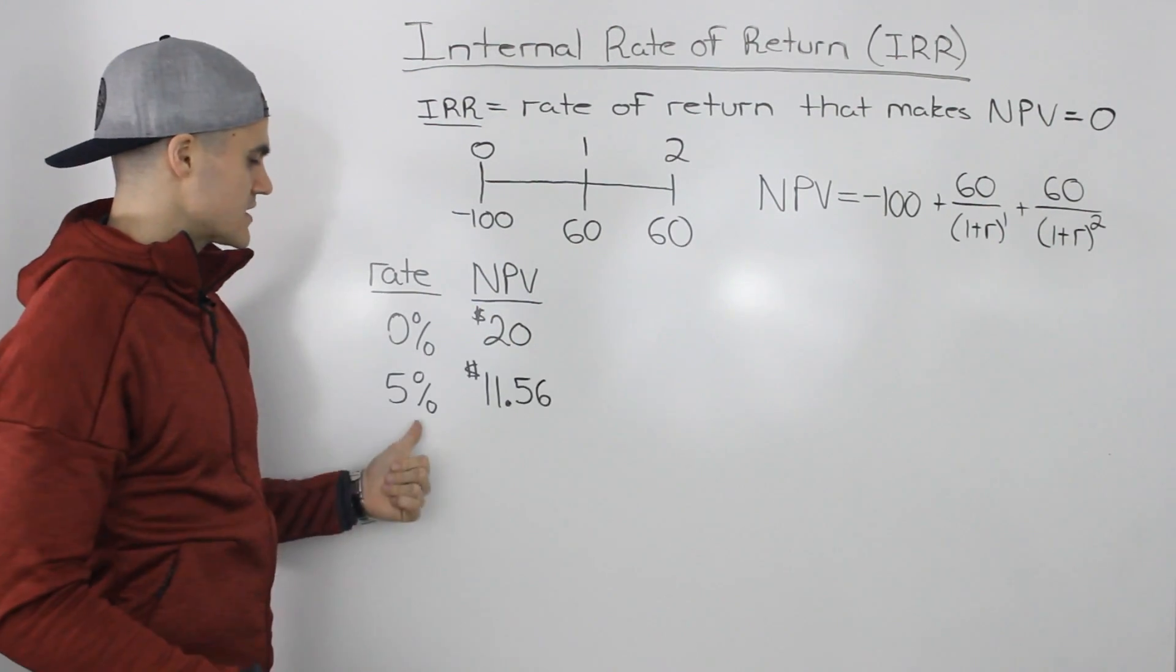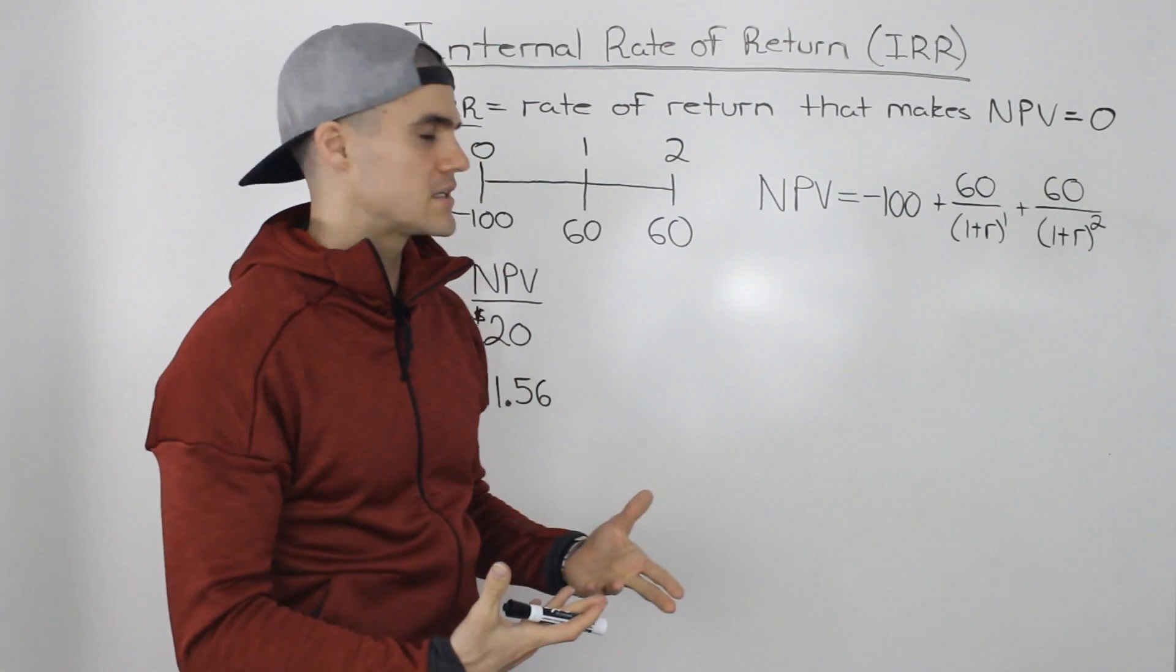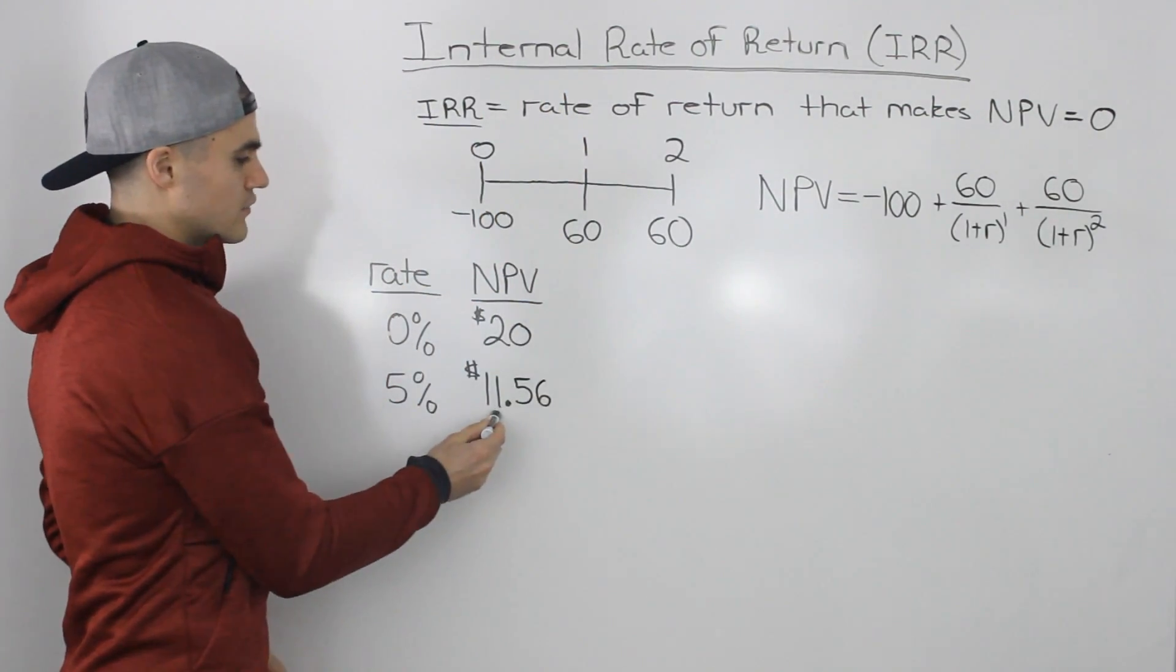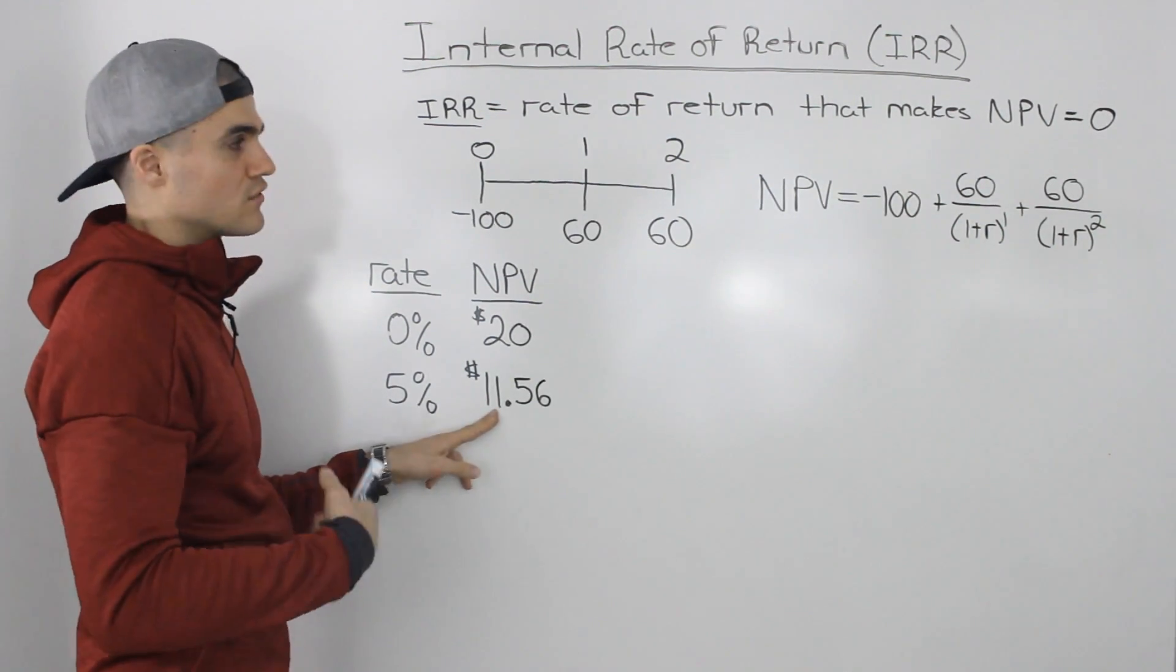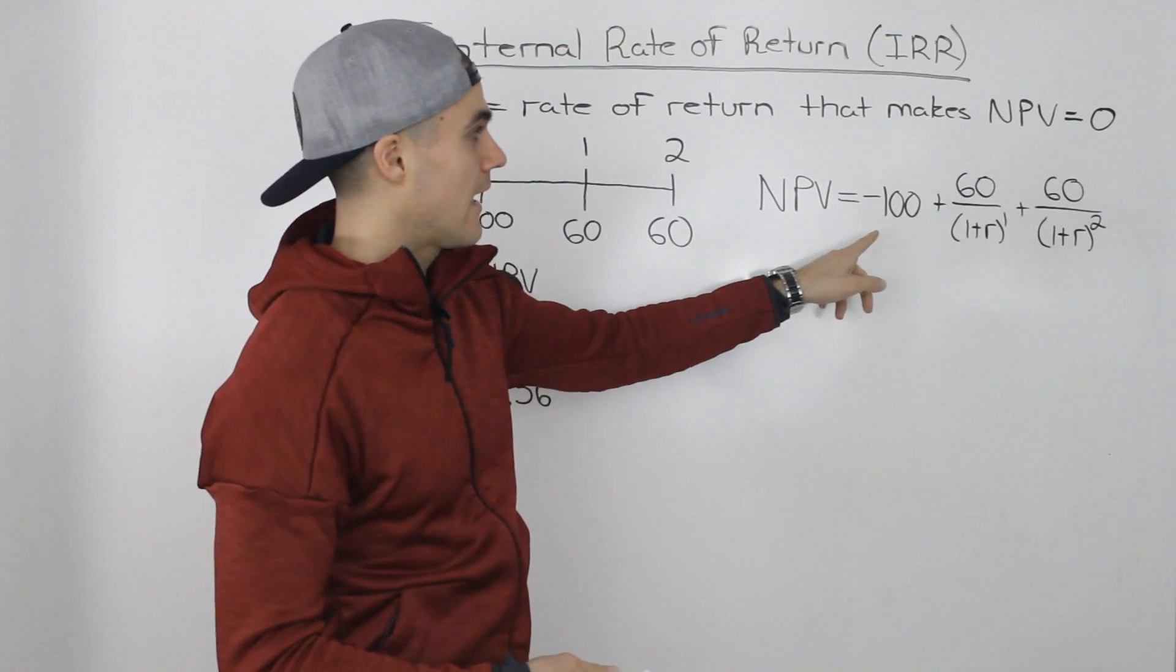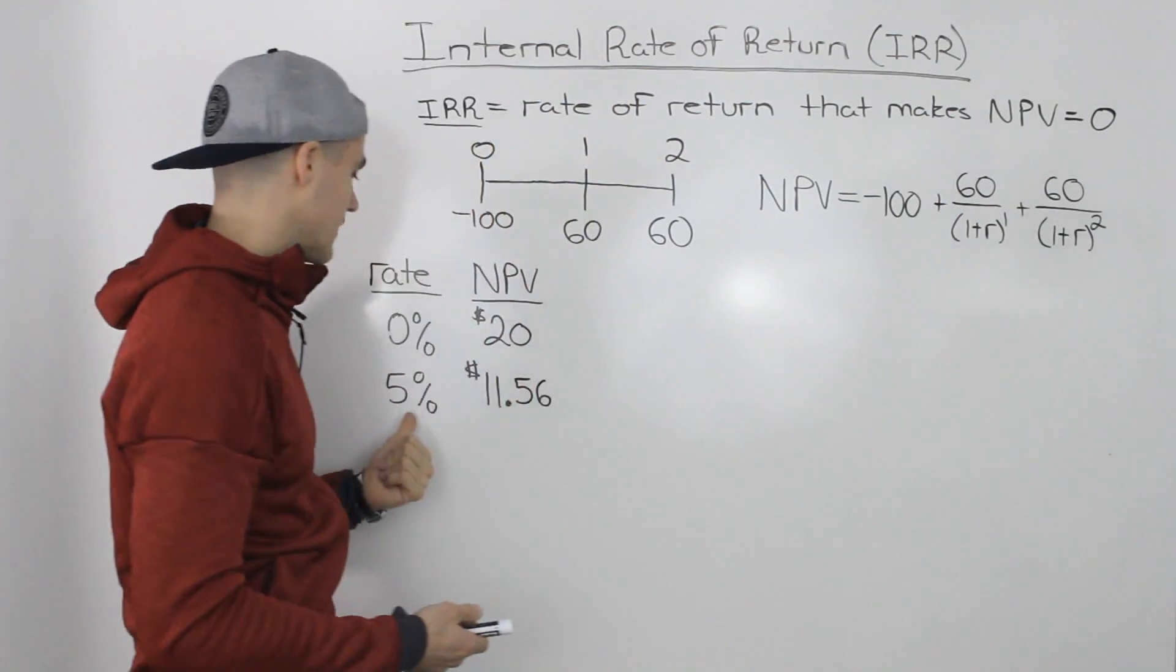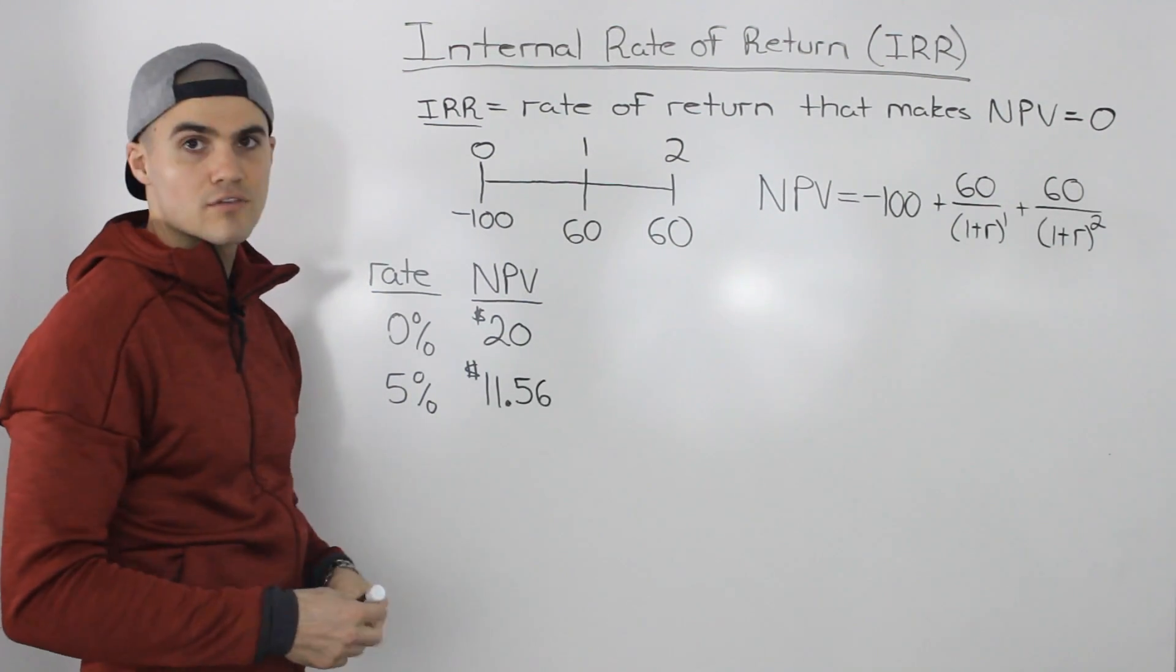Now similarly, what if the discount rate is five percent? Well we take the five percent and if we plug it into this formula, the five percent will have to be in decimals. So we would plug in 0.05 for R. And then when we do that and we calculate the NPV in our calculator, we would get $11.56. Now you can also find this NPV using your financial calculator. So you would input the cash flow at time zero as negative $100, and then in year one and year two the cash flow would be $60 and $60 respectively. And then you would put in that five percent as your discount rate, compute the NPV. You should get that same answer of $11.56.